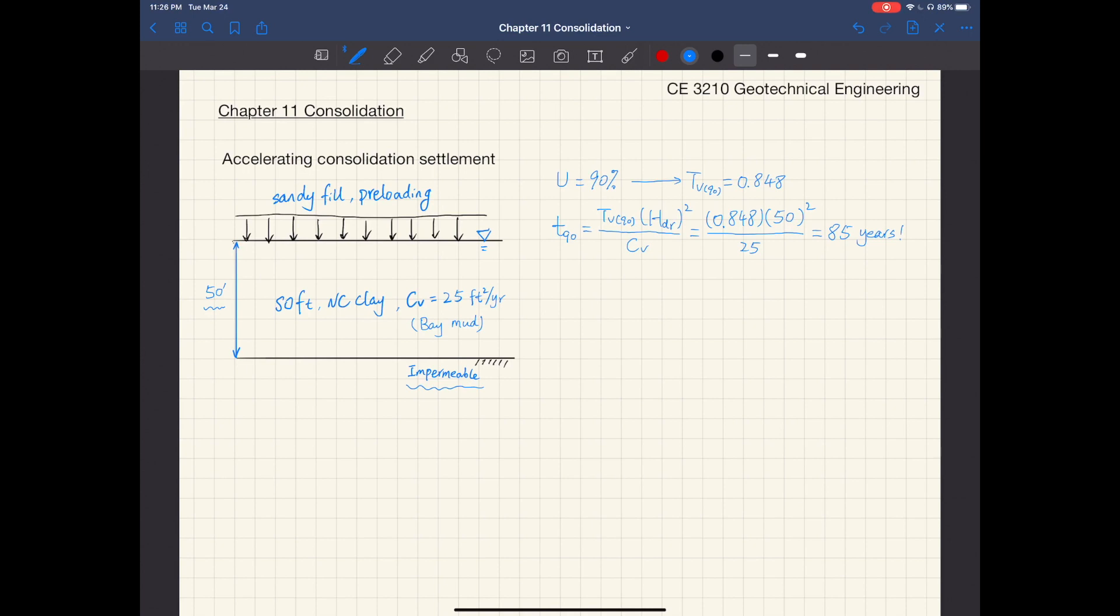If you look at this expression for T, there are actually two factors that impact this time. This time T is proportional to the square of the drainage distance and is inversely proportional to the coefficient of consolidation C sub V.